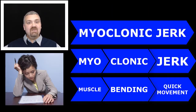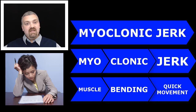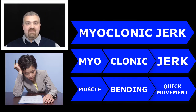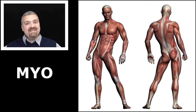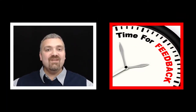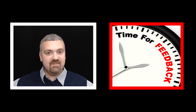Last example for myo: a myoclonic jerk. Myo means muscle, and clonic means to bend. So a myoclonic jerk is an involuntary spasm of your muscles — I get these a lot when I'm going to sleep, just drifting off and suddenly spasming for no reason. What's your favorite word that uses one of these terms? Leave a comment below to help your fellow students and we'll grow gray matter together.